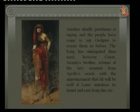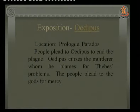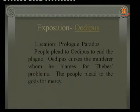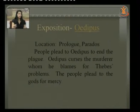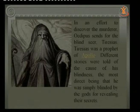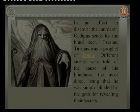Exposition begins in the Prologue and Parados. The people plead to Oedipus to end the plague because they knew he was the one who had answered the Sphinx's riddle and saved Thebes before. Oedipus curses the murderer whom he blames for Thebes' problems, while the people plead to the gods for mercy. In an effort to discover the murderer, Oedipus sends for the blind seer Tiresias, who was a prophet of Apollo. Different stories were told about the cause of his blindness — the most common being that he was blinded by the gods for revealing their secrets.